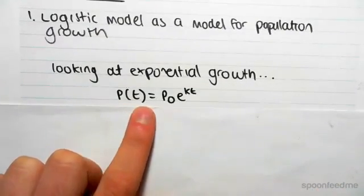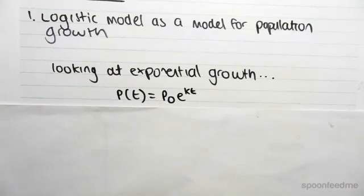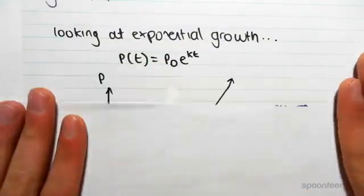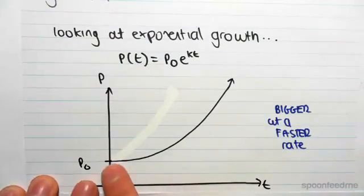function P(t) equals P naught e to the power of kt. We got that from the differential equation dP/dt equals kP. Okay, if I were to draw this graph it would look like this.